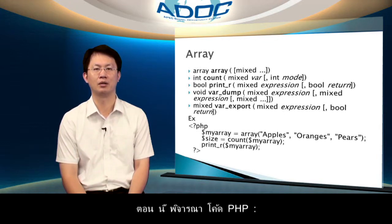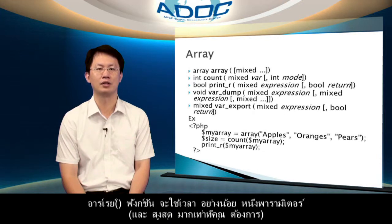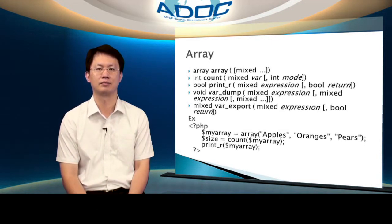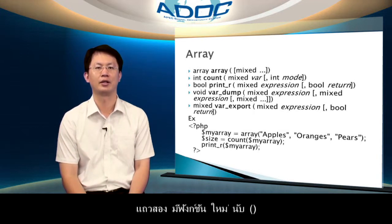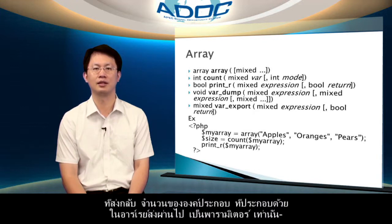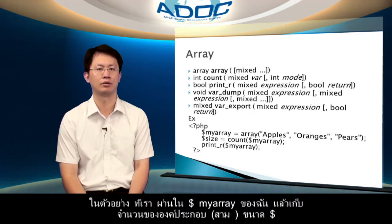Now consider this PHP code. On line 1, we see the most basic way to create an array — the array function. The array function takes a minimum of one parameter, and a maximum of as many as you want, and returns an array containing those variables. So my_array now contains all three variables. Line 2 contains a new function, count, that returns the number of elements in the array passed to it as its only parameter. In the example, we pass in my_array and store the number of elements — three — in size.